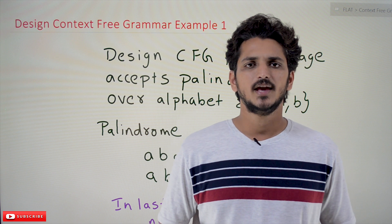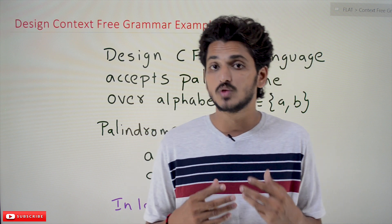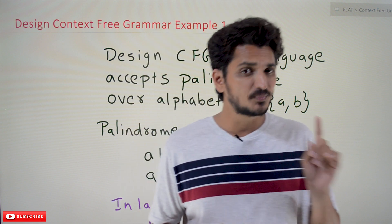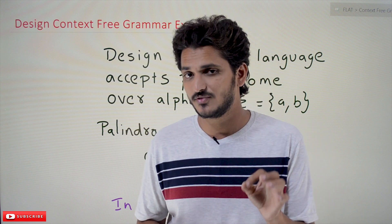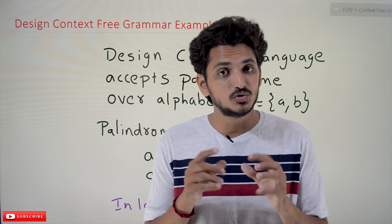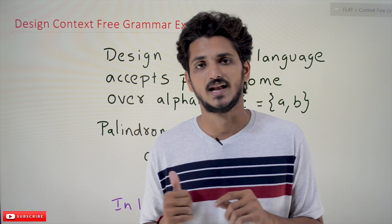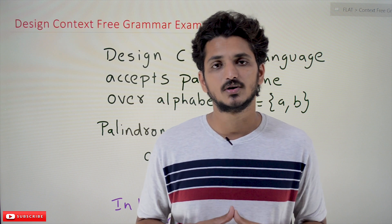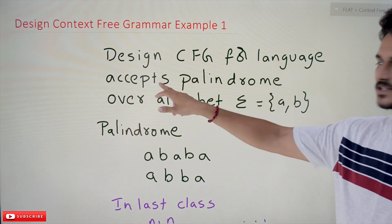Hi, welcome to Learning Monkey. I am Raghuvir. In this class we do some practice examples on how to write context-free grammar for a given language. In our previous classes we wrote context-free grammar for the a^n b^n language, so please watch that class. The link for the playlist is provided in the description below. Coming to today's class, the example is: design a CFG for the language that accepts palindromes.